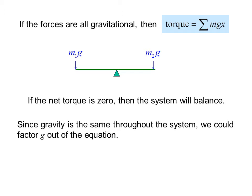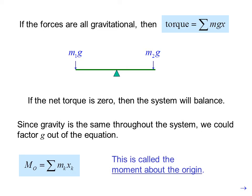Since gravity is the same throughout the system, we could factor g out of the equation. We get M_o equals the summation of m_k times x_k. This is called the moment about the origin.